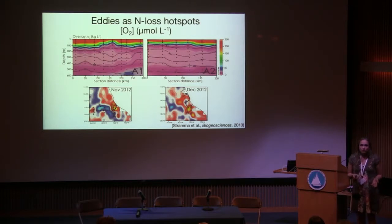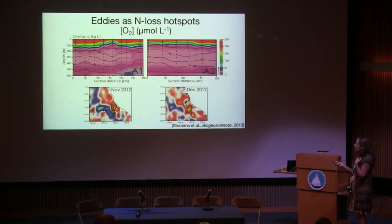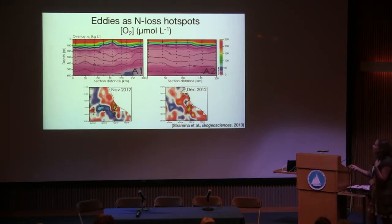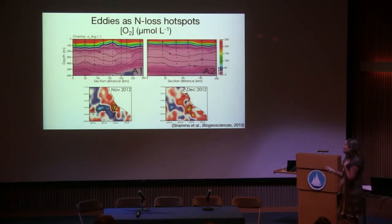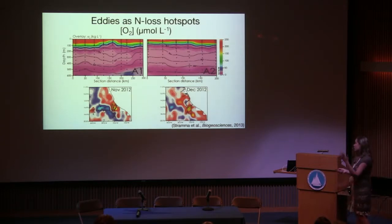Here are the observational results. For EDI A, the oxygen concentration section — with isopycnals overlaid — shows that for the anticyclonic EDI there is injection of low-oxygen water visible as a lens-shaped form, typical of mode water eddies, into the surface water.